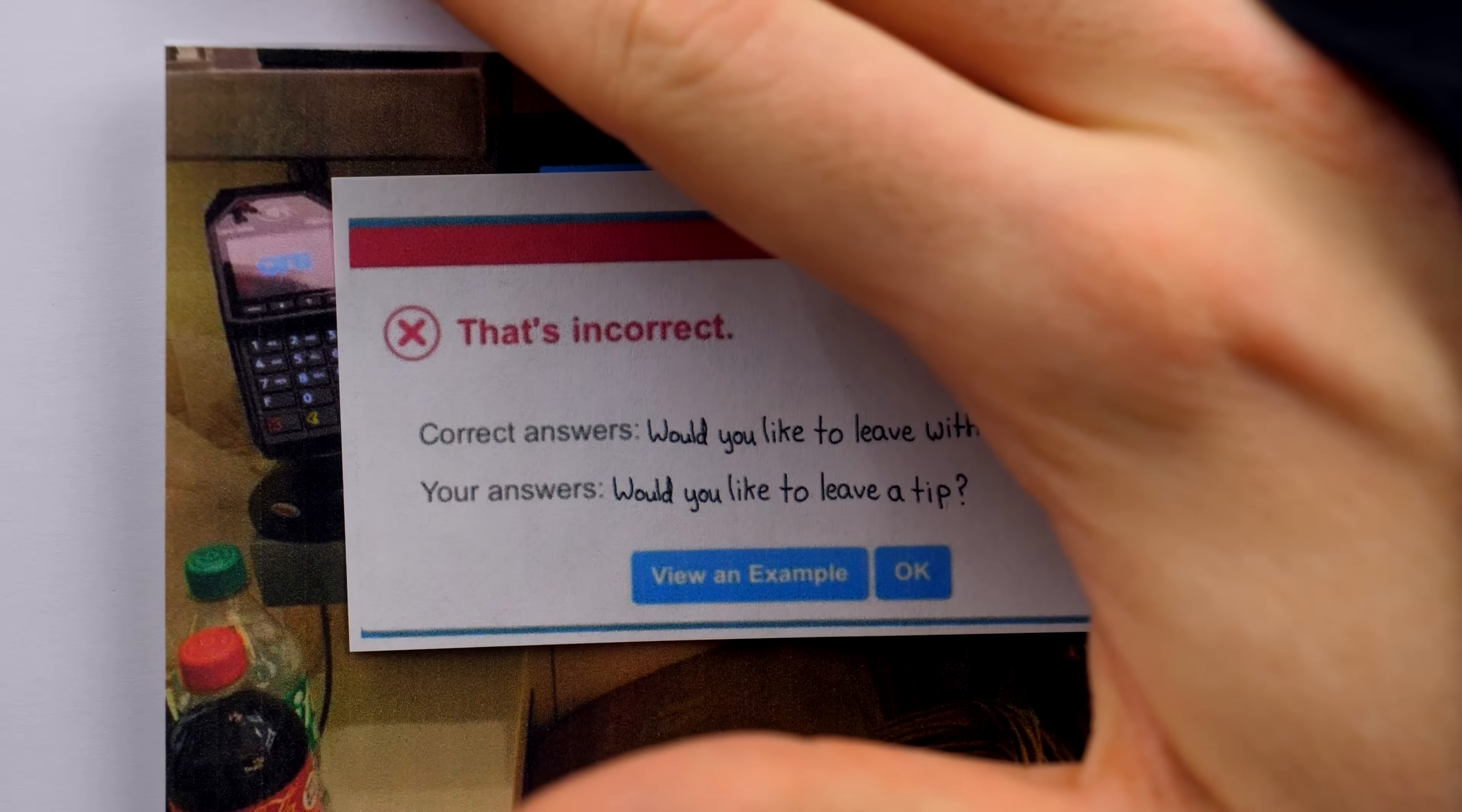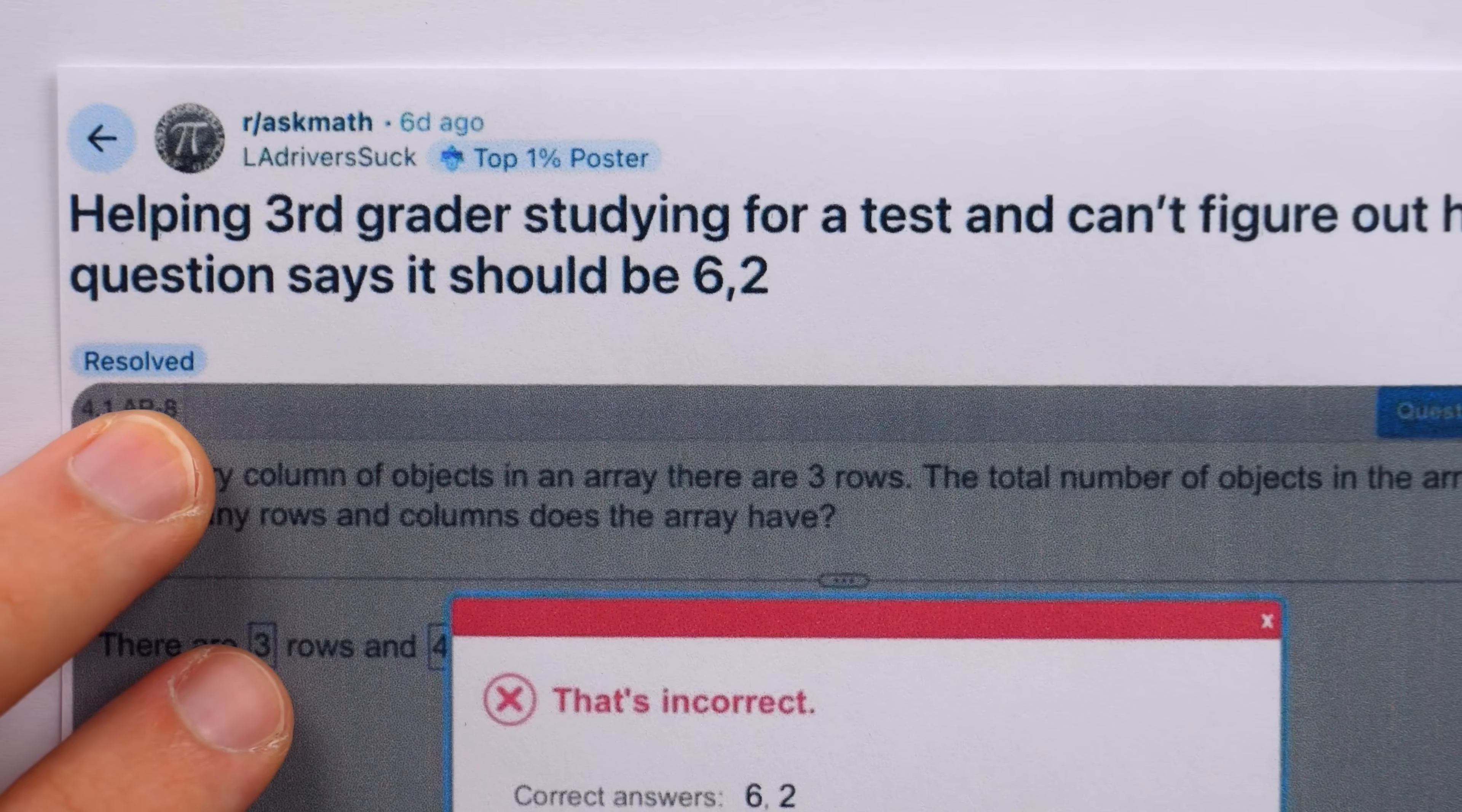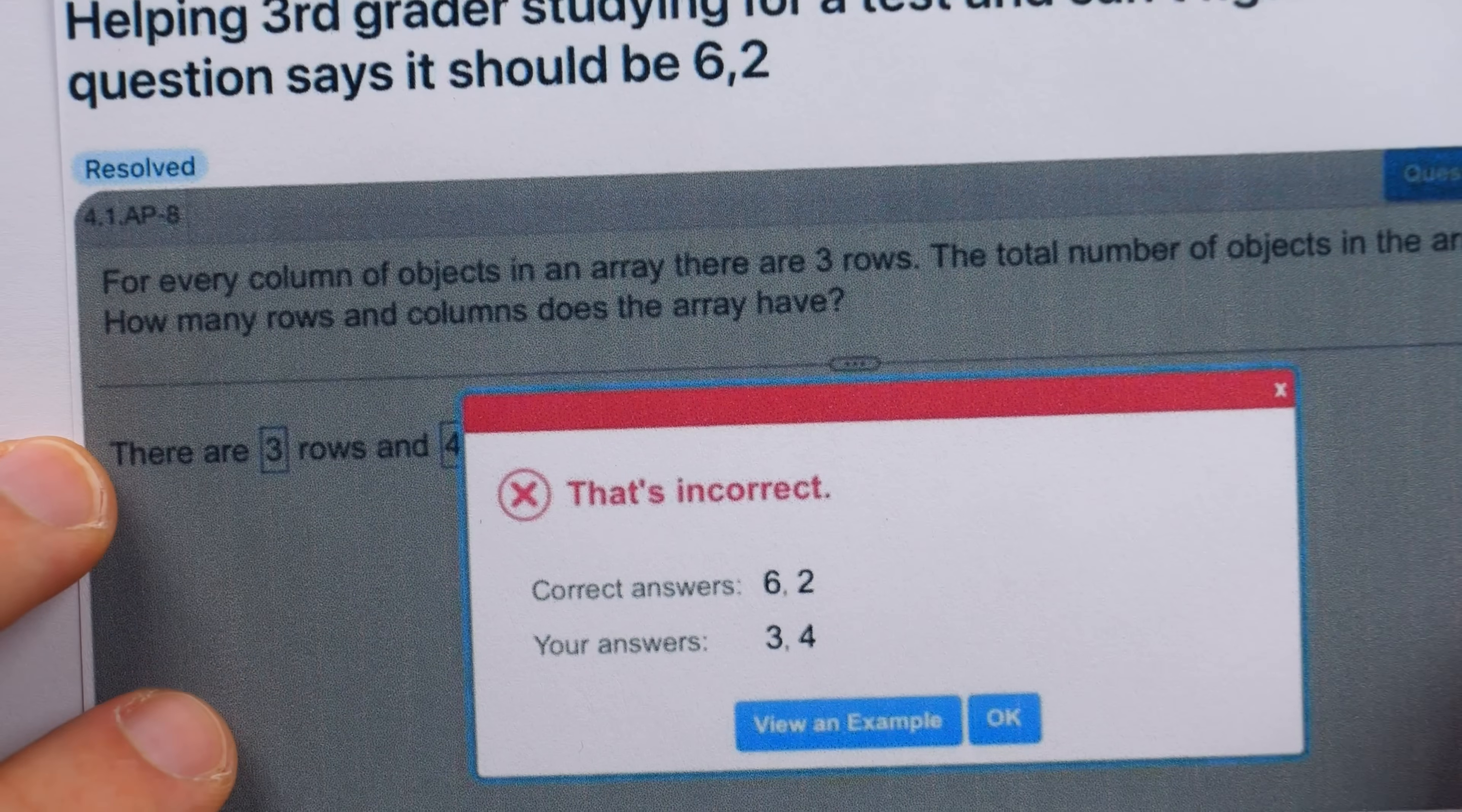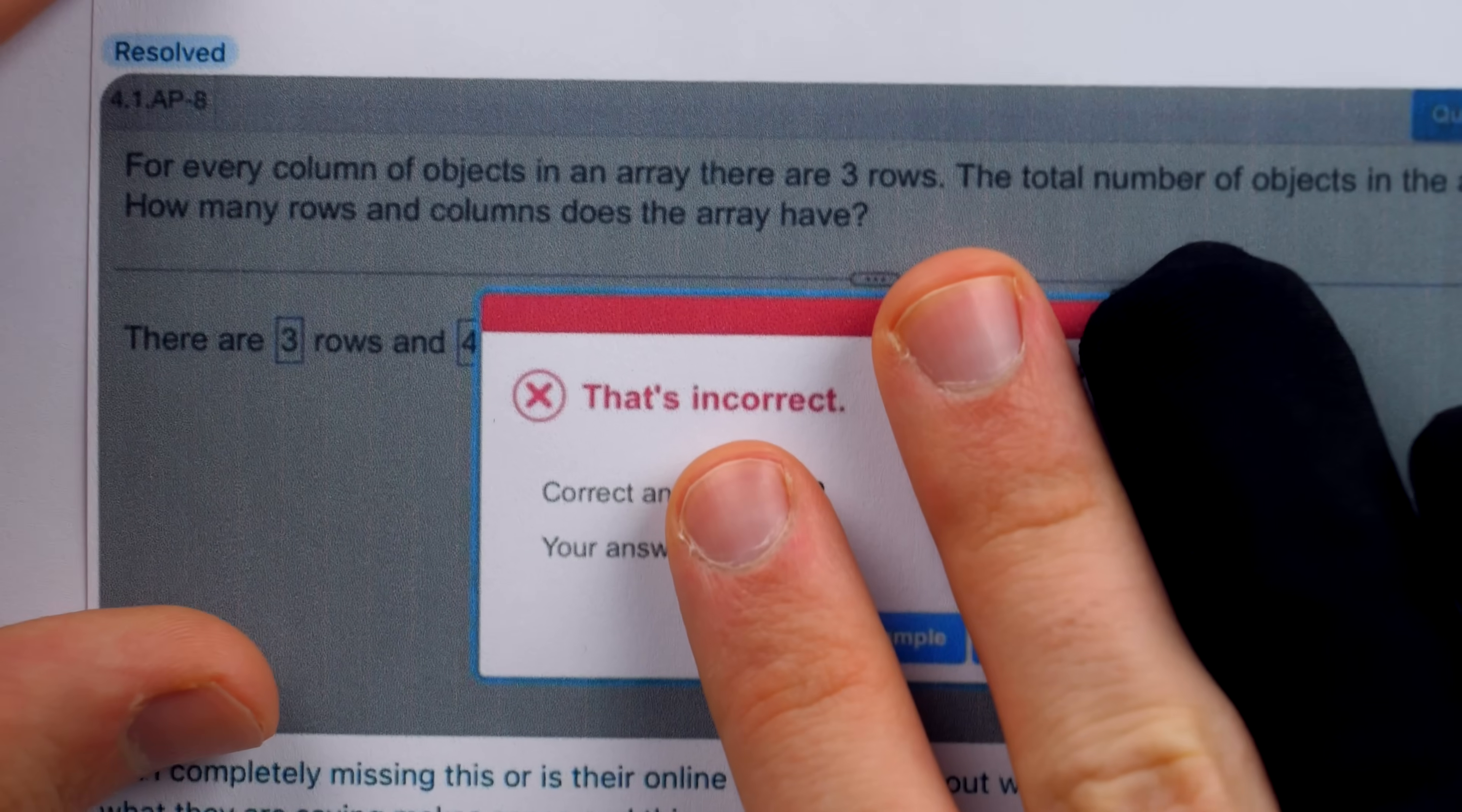I suppose for now, we'll just have to keep dreaming. But the other day on r slash askmath, LA Drivers Suck was subjected to this omnipotent force. He's helping his third grader study for a math test, and he can't figure out how this question says the answer should be 6-2. He asks, am I completely missing this, or is their online homework flat out wrong?